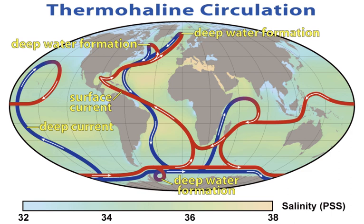The resulting Antarctic Bottom Water (AABW) sinks and flows north and east, but is so dense it actually underflows the NADW. AABW formed in the Weddell Sea mainly fills the Atlantic and Indian basins, whereas AABW formed in the Ross Sea flows towards the Pacific Ocean. The dense water masses formed by these processes flow downhill at the bottom of the ocean, like a stream within the surrounding less dense fluid, and fill up the basins of the polar seas. Just as river valleys direct streams on the continents, the bottom topography constrains the deep and bottom water masses.